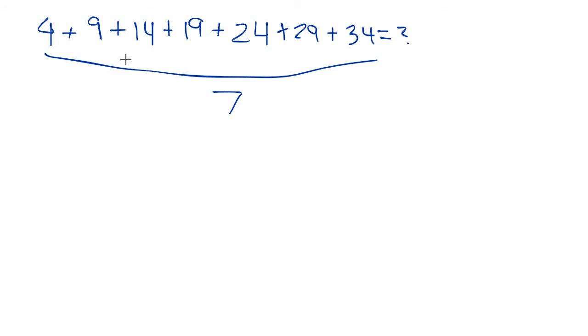But that requires finding the sum, and that's what we're trying to find. So a different way to do it is just taking the first term and the last term, adding them together, and then dividing it by 2. And that is actually equal to the average of the whole entire arithmetic series.